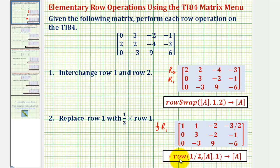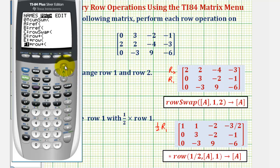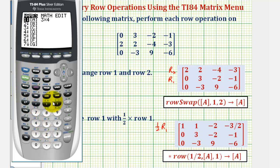To do this, we'll use the times row command. So we'll press second, matrix, right arrow once to math, up and select times row, which is option E, not F. Notice F is times row plus — we'll use that later. So we'll press enter for times row, and then enter the constant we're multiplying by, which is one-half, comma, matrix A — so second, matrix, enter — comma, row one, so one.